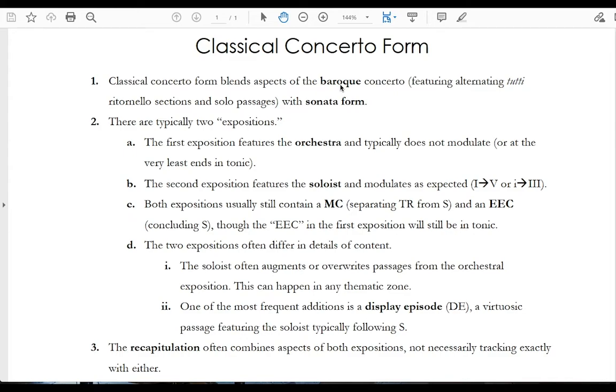One thing that's different between classical concerto form and sonata form, though, has to do with the number of expositions. In classical concerto form, there are actually usually two expositions. They differ in two ways. So the first exposition features the orchestra and typically does not modulate, or at the very least, it'll end in tonic.